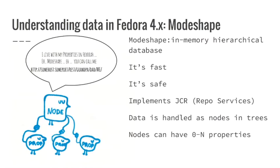In Fedora 4, data lives inside ModeShape, which is basically a hierarchical in-memory database — super fast and safe. It implements the JCR repository services. One very important thing about ModeShape is that everything is handled as nodes in trees. These nodes can have properties. The node lives inside and connects to others, building a tree structure. It's easy to traverse, easy to search, easy to maintain in memory, and most real-world things can form trees. This node can be denoted as a path.